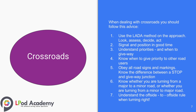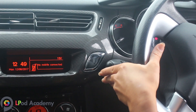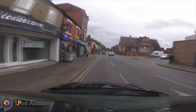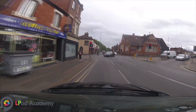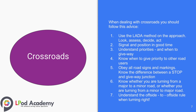When dealing with crossroads, you should follow this advice: use the ladder method on the approach — look, assess, decide, and act. You should signal and position your vehicle correctly in good time. You should understand road priorities and when to give way to other traffic.